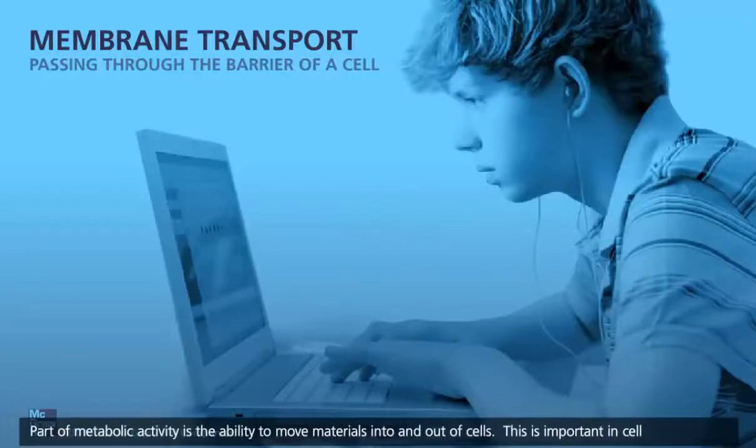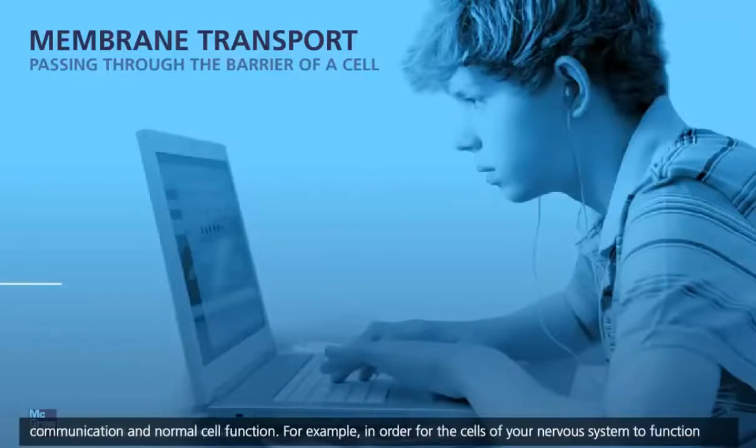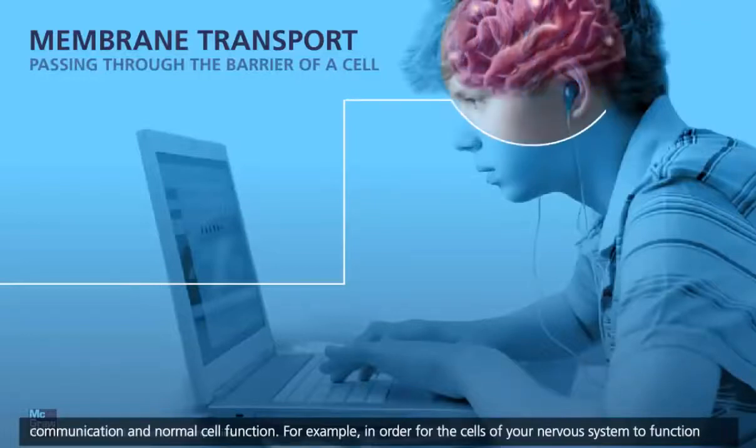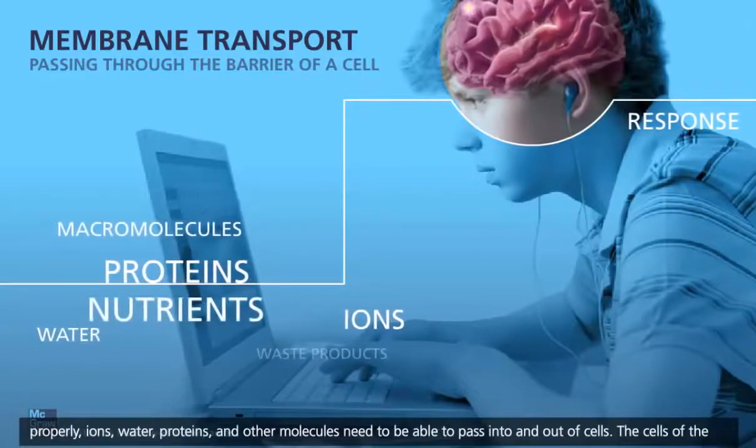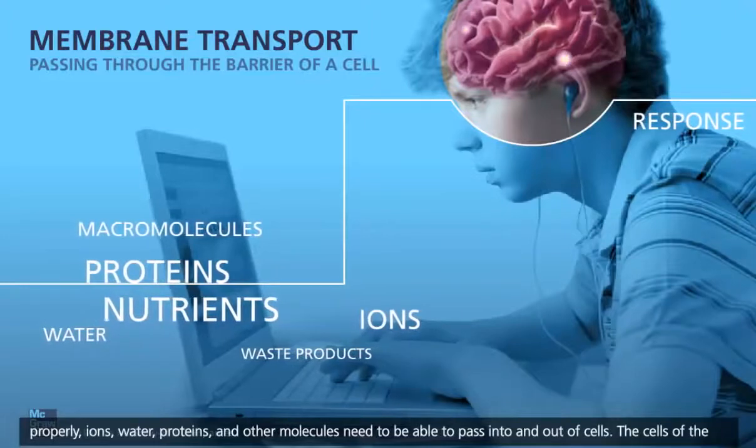Part of metabolic activity is the ability to move materials into and out of cells. This is important in cell communication and normal cell function. For example, in order for the cells of your nervous system to function properly, ions, water, proteins, and other molecules need to be able to pass into and out of cells.